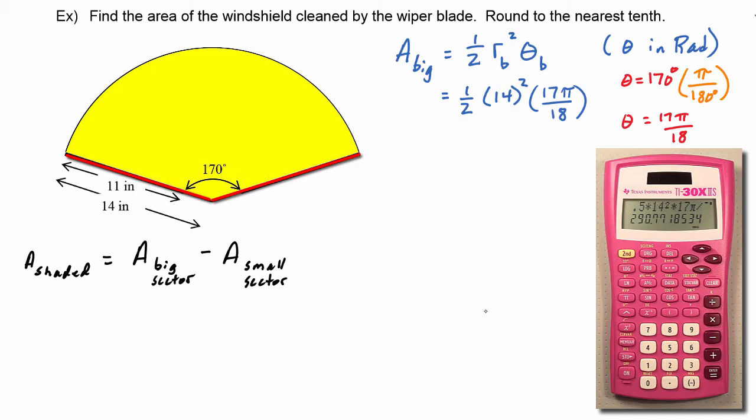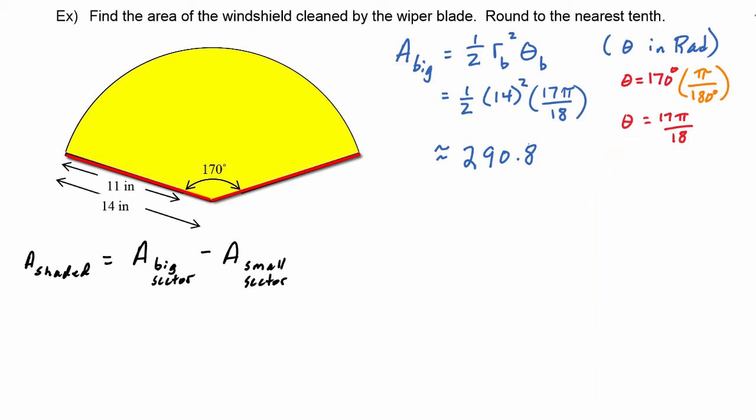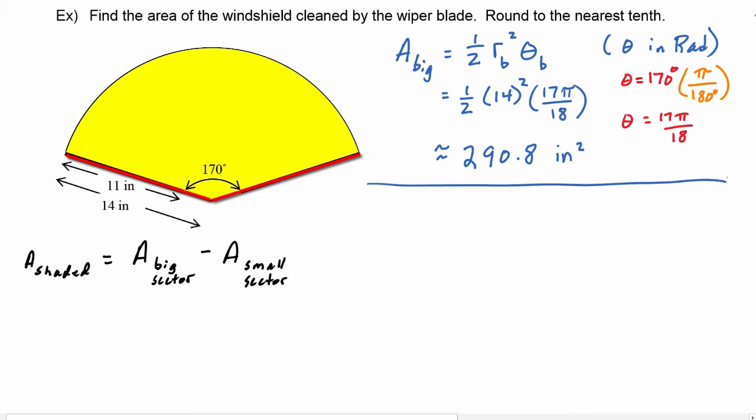And we see if we round to the tenths place that the area of the big sector is approximately 290.8. Now let's think about what our units would be. We know that the wiper blade lengths are in inches, and we have inches squared here. We know this is an area, so it makes sense that the units would be inches squared. So that's the area of the big sector.